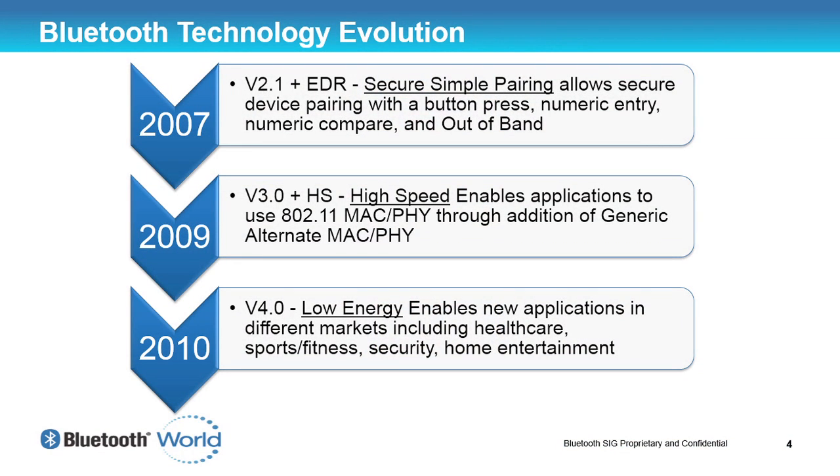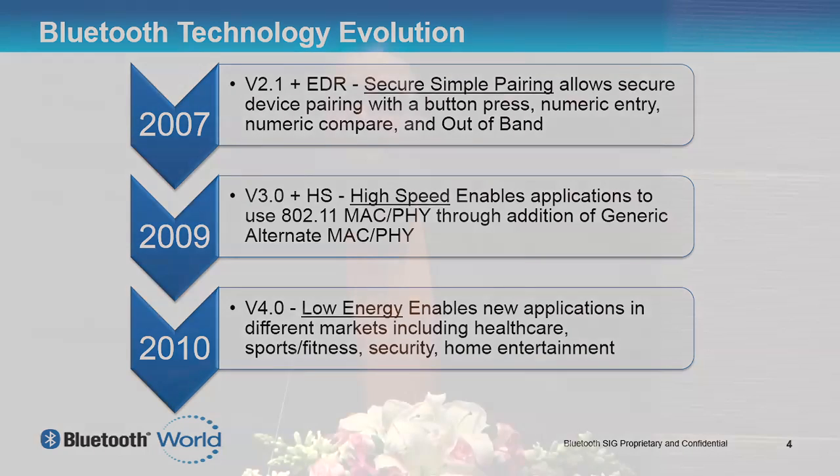Version 2.1, which came out in roughly 2007, introduced technology called Secure Simple Pairing, allowing a device to securely pair with another device via a very simple user interface. For example, the last time I rented a car in France, I turned on Bluetooth, pressed a button on the car, and it asked whether the number shown matched what was on my phone. I said yes on both devices and they were paired — no typing required. It simply authenticated the right device.